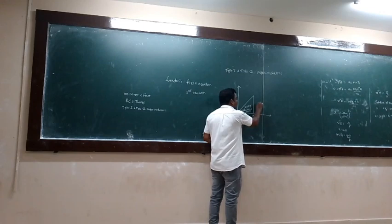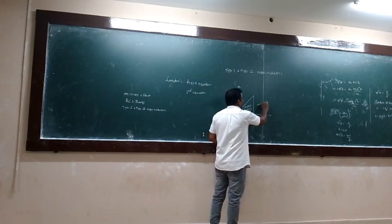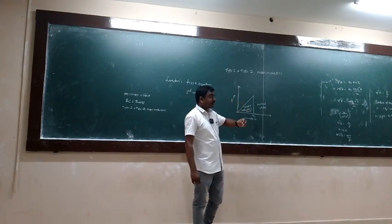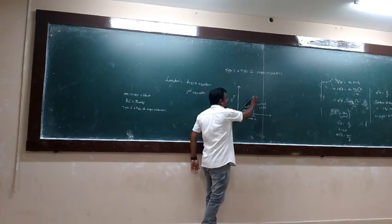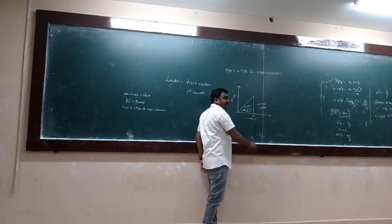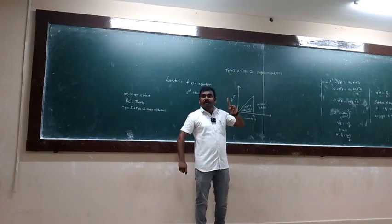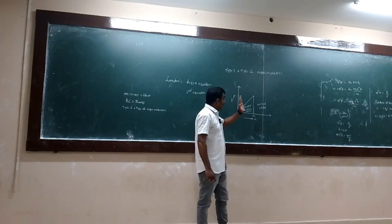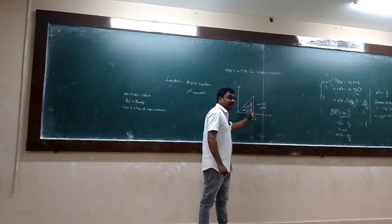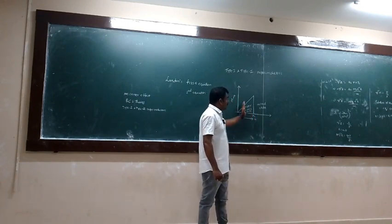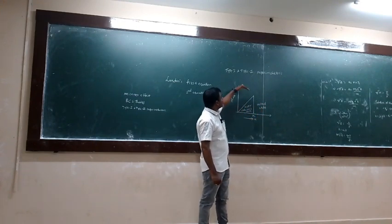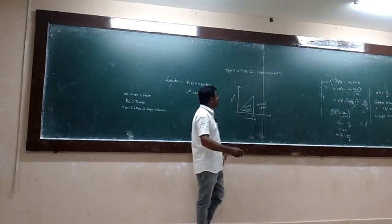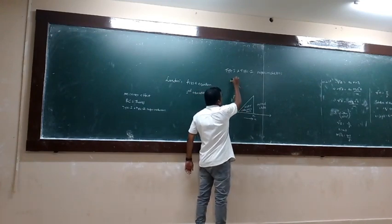That magnetic field is called the critical magnetic field. For Type 1 superconductors, it has a sharp critical magnetic field — only one critical magnetic field — and at that critical magnetic field, the material changes from the superconducting state to the normal state. These superconductors are called Type 1 superconductors, and they are also named soft superconductors.